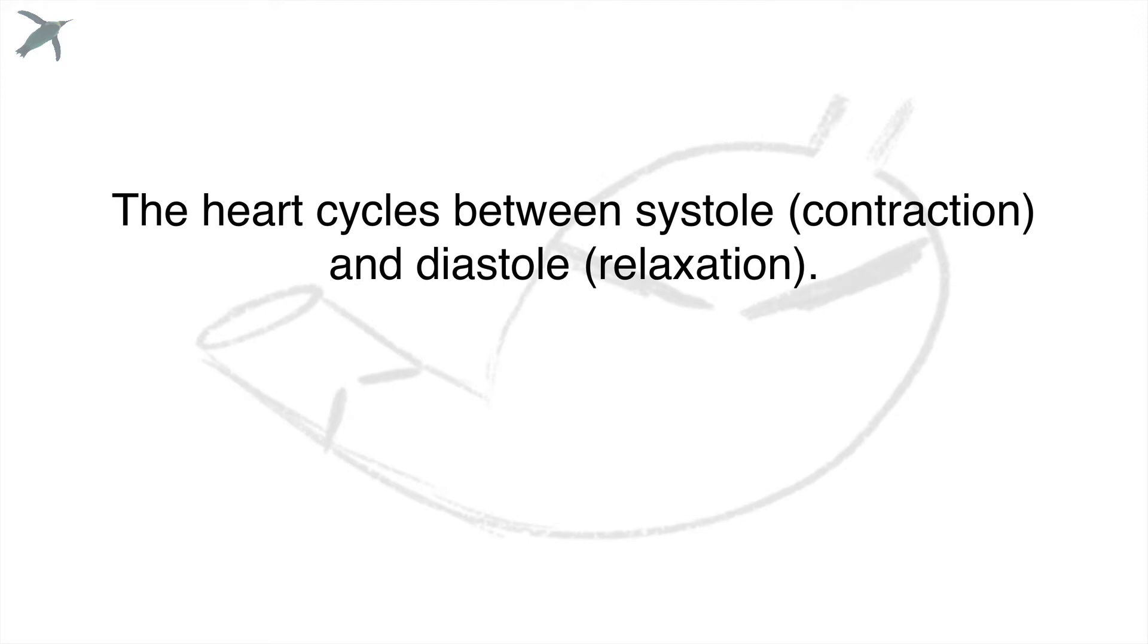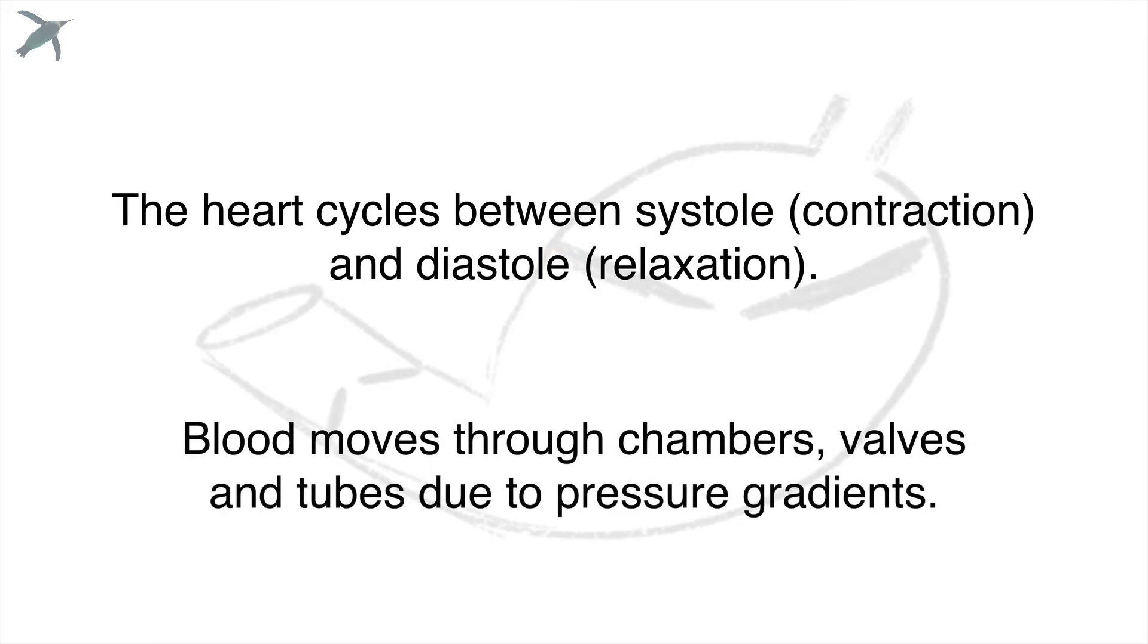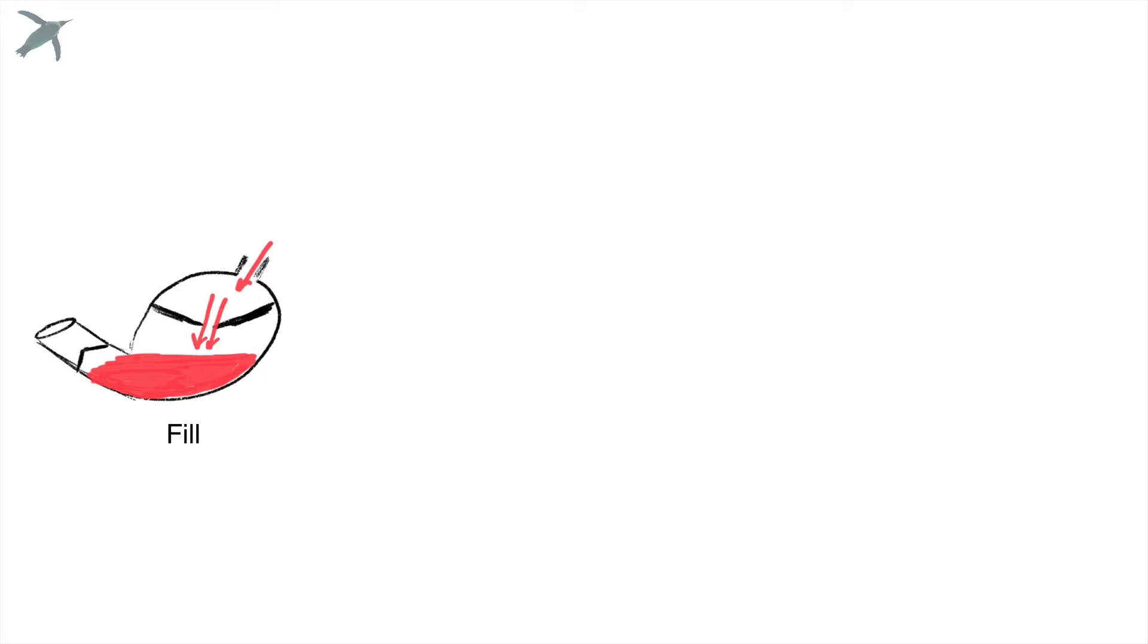And we've got to keep track of only two things. The heart cycles between contraction and relaxation, systole and diastole. And blood moves from areas of high pressure to areas of low pressure until equilibrium is reached. So we're going to keep those two things in mind and go through the basic phases of the cardiac cycle.